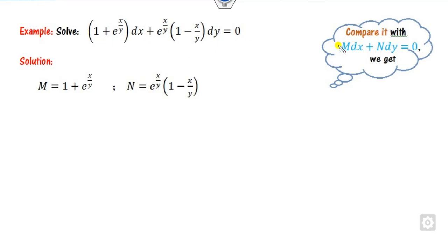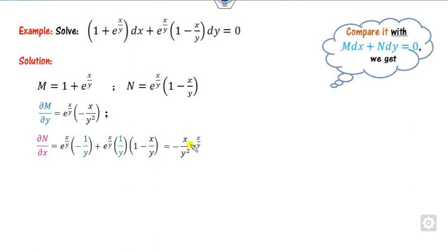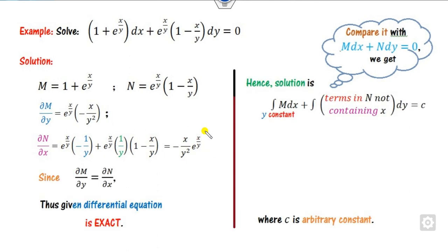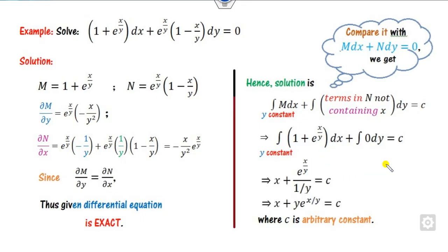Look at the next example. You compare to get M and N, then find their derivatives. For ∂N/∂x, this is a u·v form. Taking the derivative and opening the bracket, one part becomes 0 and the other part cancels out. Equating the results, both are the same, so this is exact. The terms in N not containing x — there are none — so that part is 0. Integrating with y constant: e^(x/y) integration gives e^(x/y) · (1/y) + 0 = c, which is the right answer.